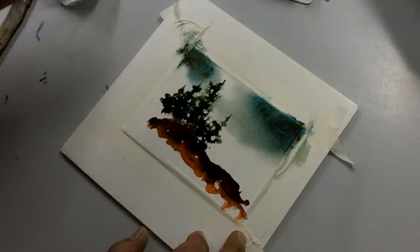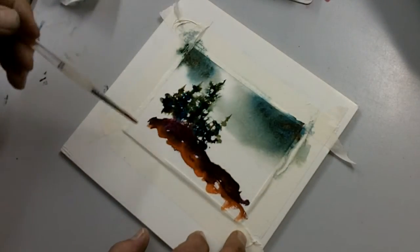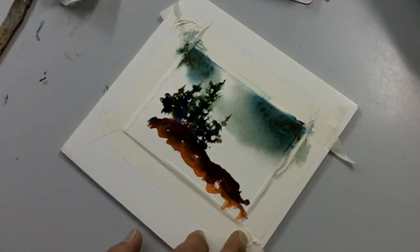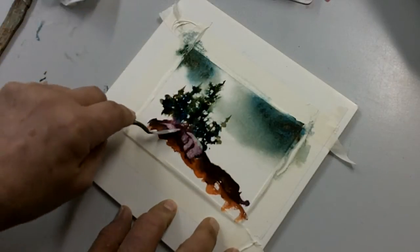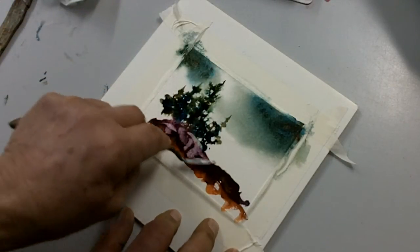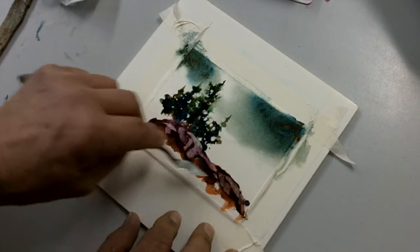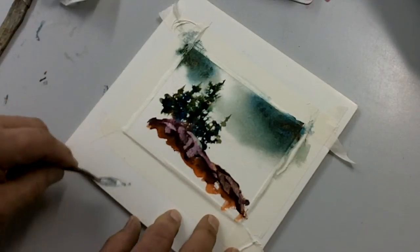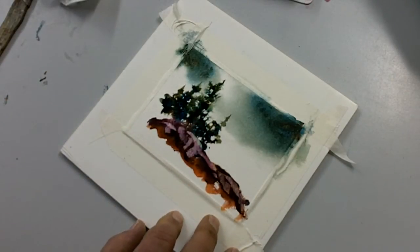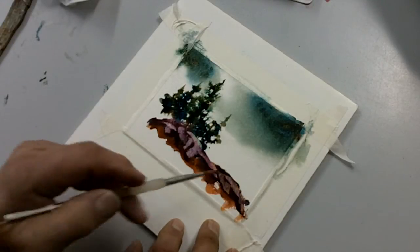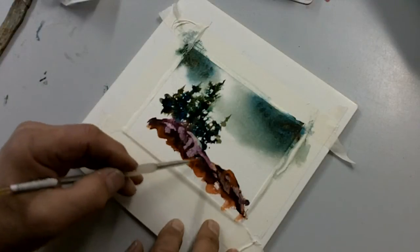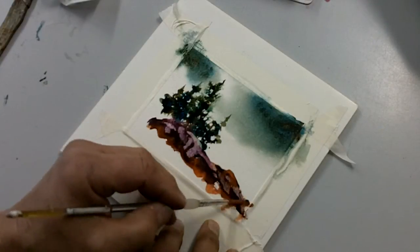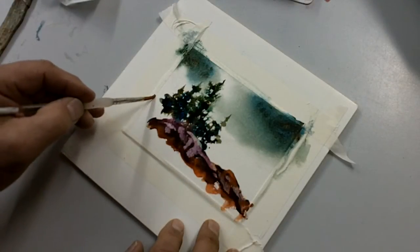And then we'll take our palette knife, the good old palette knife, and scrape out the rock. Look at that. You make those nice shapes. I have a tendency to make shapes without even trying that are too much alike. That looks too much the same, so we've got to break that up.